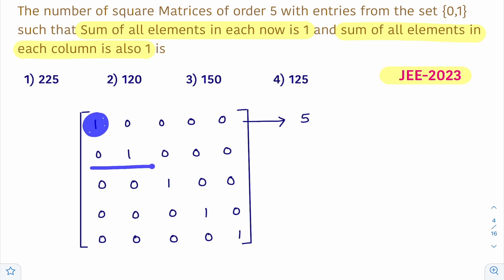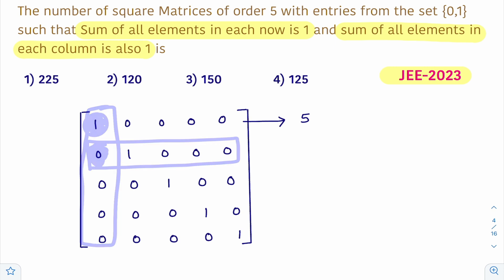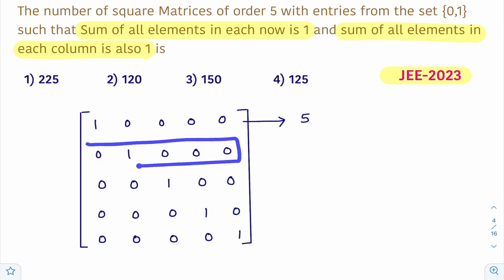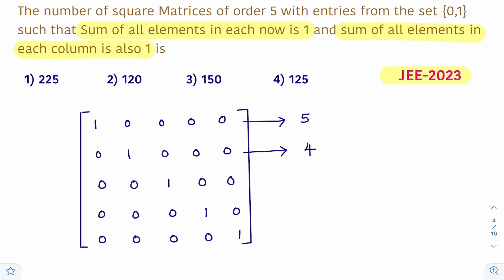Now come to the second row. We cannot fill 1 in the first place, because if we do, the sum of all elements of that column will become 2. So in the second row, 1 can only be filled in the remaining 4 positions — that is, 4 ways only.